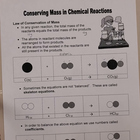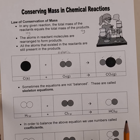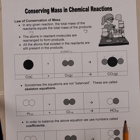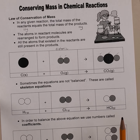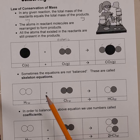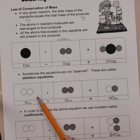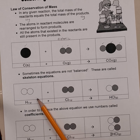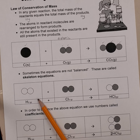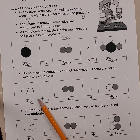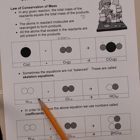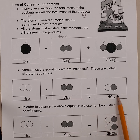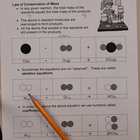However, sometimes in a reaction that doesn't necessarily happen. Let's look at this second example. Sometimes equations are not balanced — we call these skeleton equations, and that's what this equation here is showing.